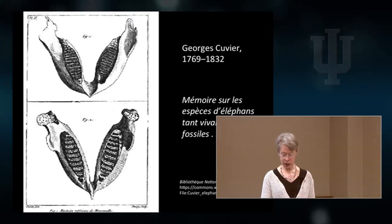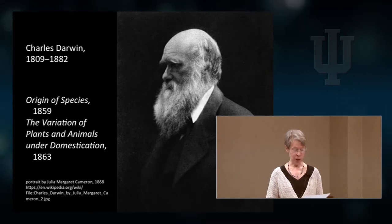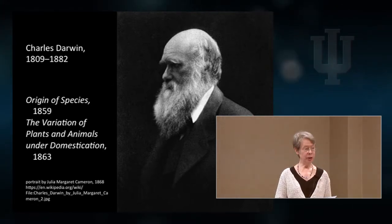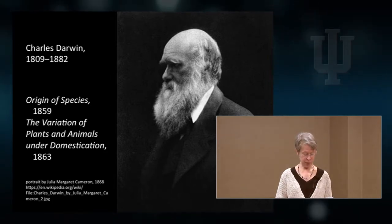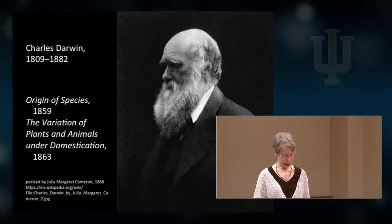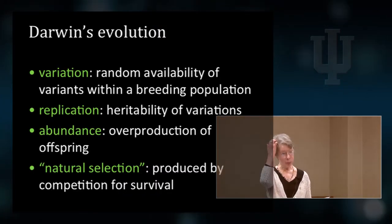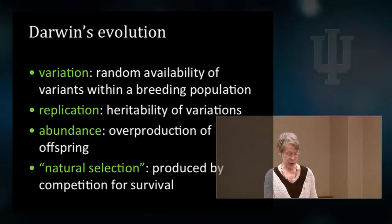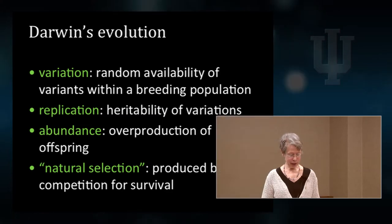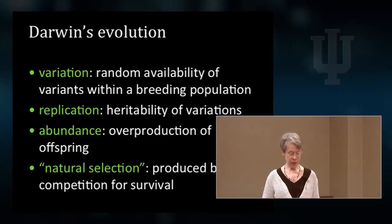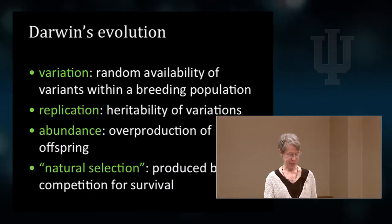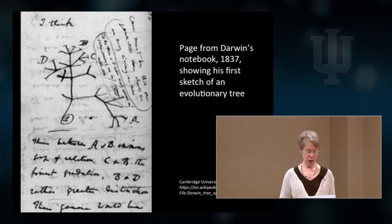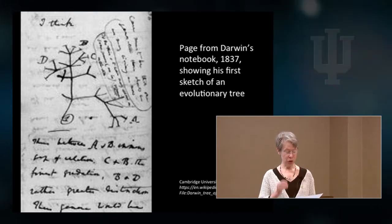The evidence that piled up inductively in the great collections of the naturalists weakened belief in linear hierarchical systems like the Scala Naturae and convictions about the fixity of species. It became possible to conceive of nature as a creative power and creation as an open-ended process. Darwin's explanatory project was twofold: to demonstrate that modern species had descended from earlier ones and to show how this could be so, to find a mechanism for descent with modification. His solution involved random variation of features within a breeding population, continuity or inheritability of variations, overproduction of offspring, and natural selection produced by competition for survival.